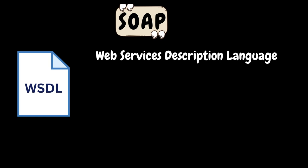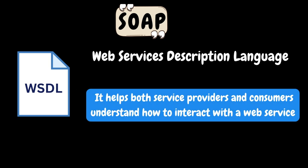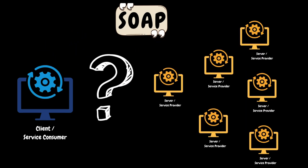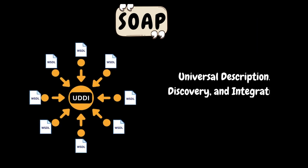WSDL stands for Web Services Description Language. It serves as a comprehensive description that helps both service providers and consumers understand how to interact with a web service. If the consumer and provider know each other, the provider will share the WSDL file directly with the consumer. But if there are many service providers and consumers don't know who to contact, that's where UDDI comes in. UDDI stands for Universal Description, Discovery and Integration. It acts as a centralized registry where service providers can publish information about their web services including service descriptions, contact information, and technical specifications. Consumers can search and query for web services using UDDI.